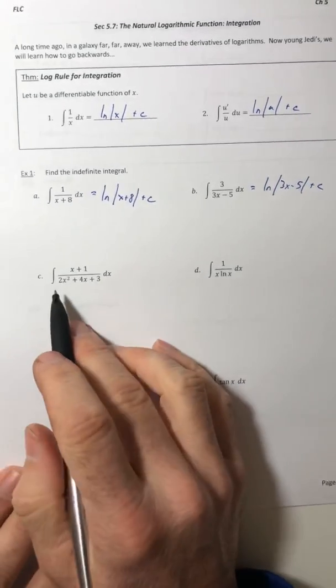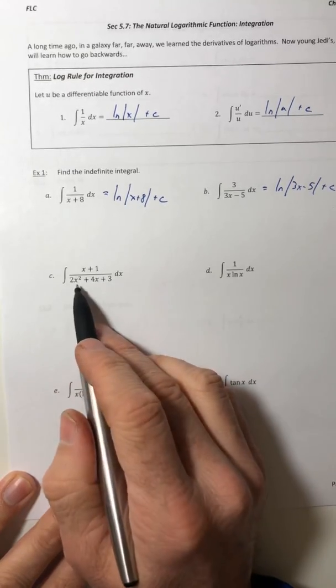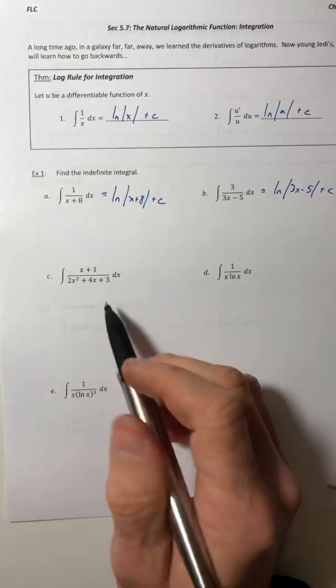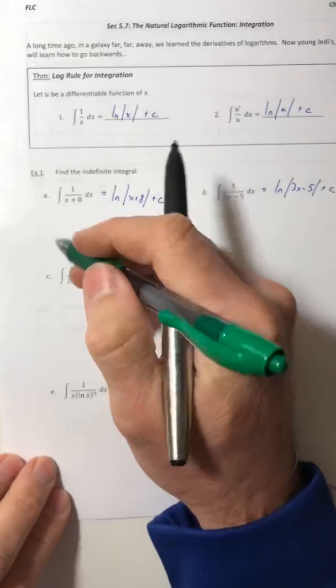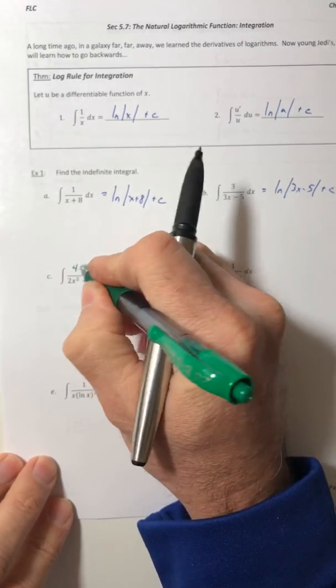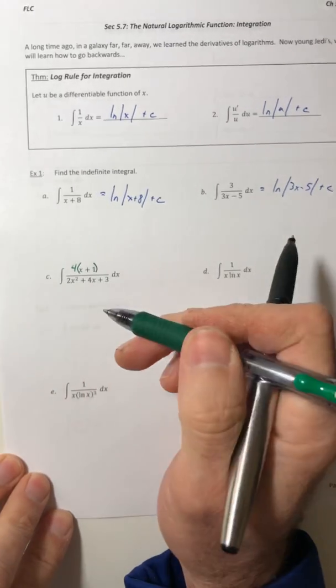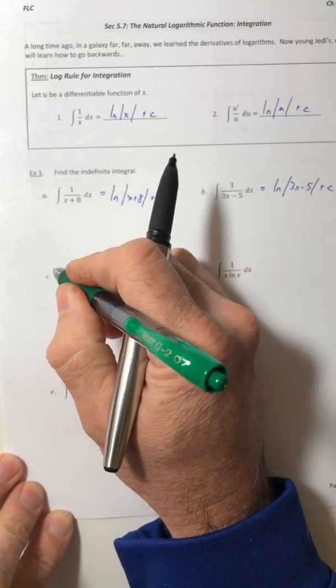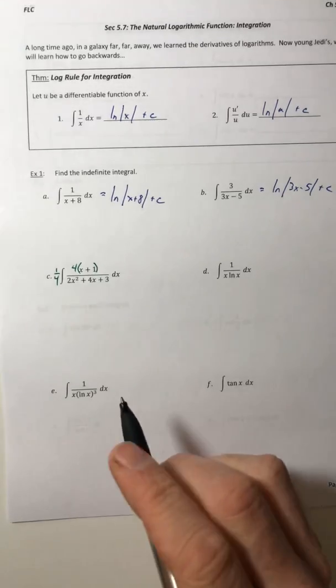Alright, so let's look at example c. The derivative of that denominator would be 4x plus 4, which I don't have on the top, I have x plus 1. But if I multiplied the top by a 4, that would make it my 4x plus 4. But I can't just multiply by a 4 on the inside, I have to do something else. I've got to multiply by a 1 fourth on the outside.